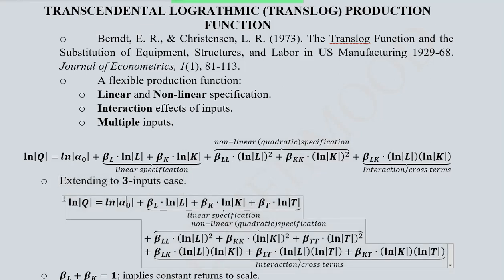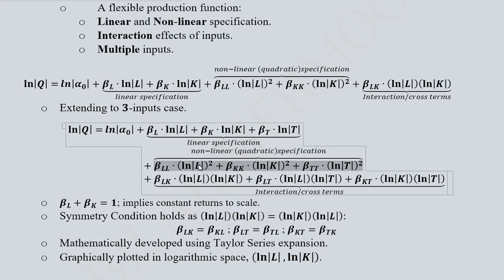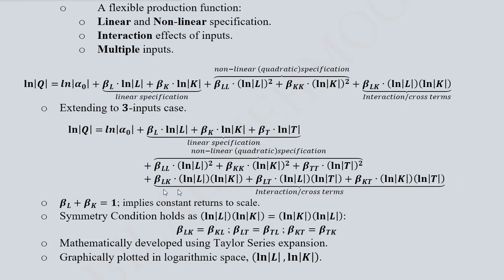Extending to the three-input case, we again have the intercept term and then the same kinds of terms but now there are three. We have the natural log of labor, natural log of capital, and natural log of technology as the third input — all three specifying the linear form. Then we have the quadratic form with natural log of labor squared, natural log of capital squared, and natural log of technology squared, each with their coefficients. Finally, the interaction terms now have three possibilities: labor-capital, labor-technology, and capital-technology, each with their corresponding parameters.